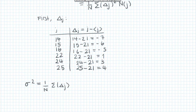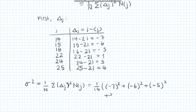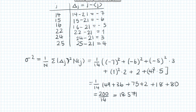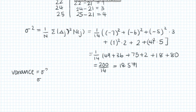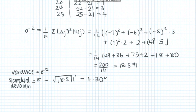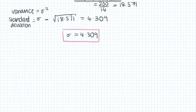We then use the summation expression to calculate the variance. Plugging in the numbers we get 18.571, but since the question asks for the standard deviation we take the square root to find the value of 4.309.